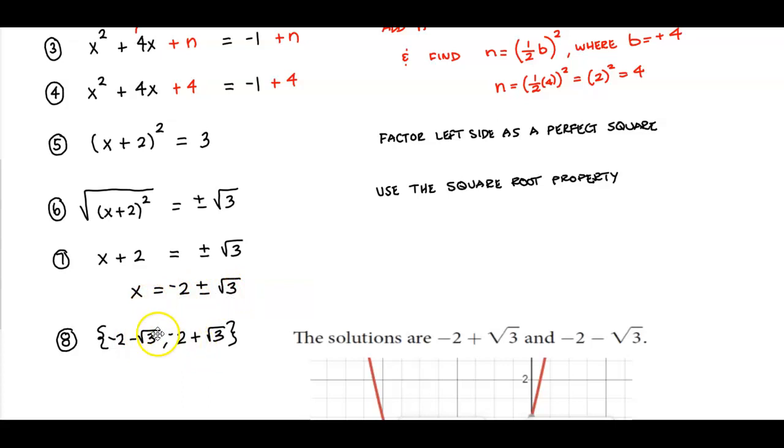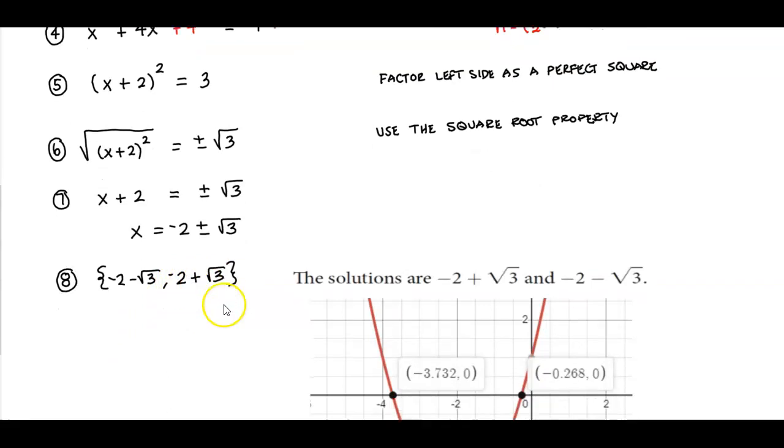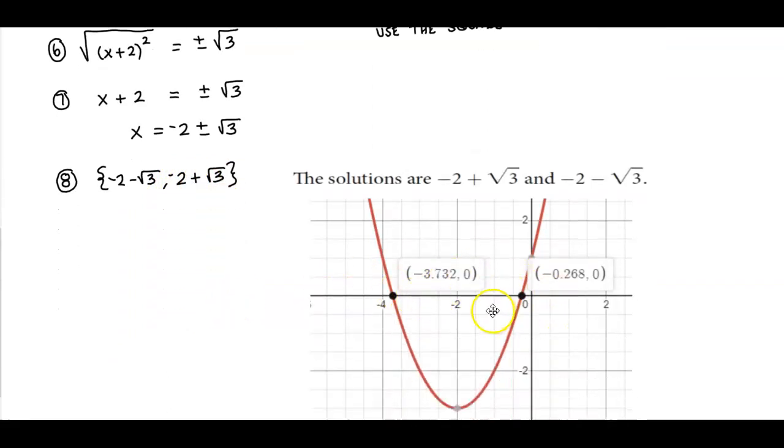So we have two solutions. The first solution is -2 - √3, and then -2 + √3. So here are our solutions on the graph. Now let's check to verify.